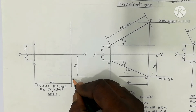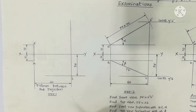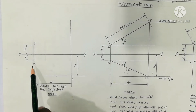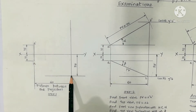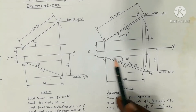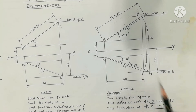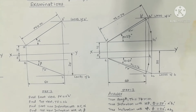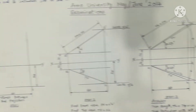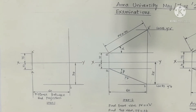Now AB is the top view. AB is the final top view, as shown in the step 3 diagram. AB has a radius, and if you complete the line, the position line is the front view length.